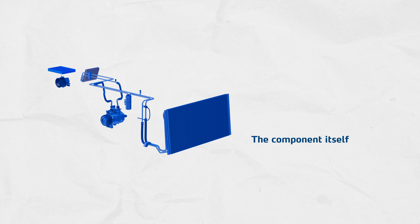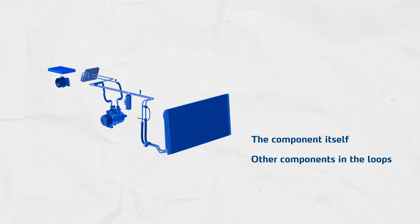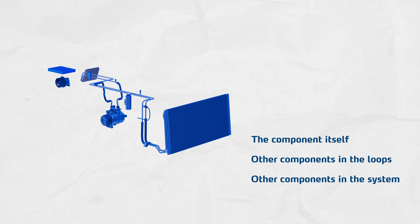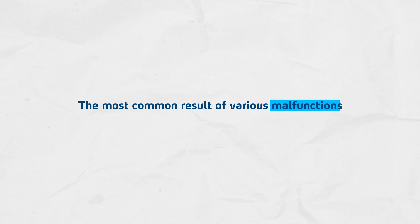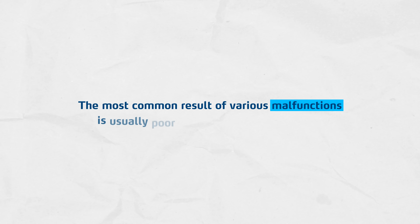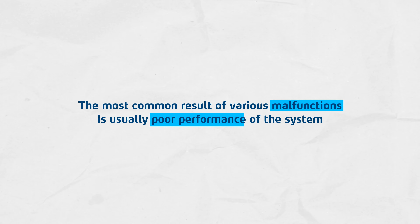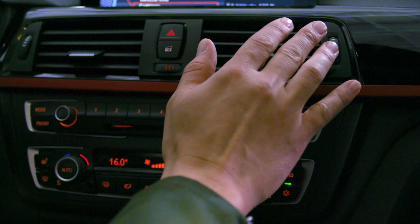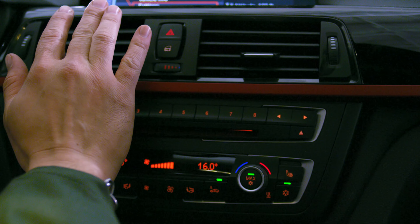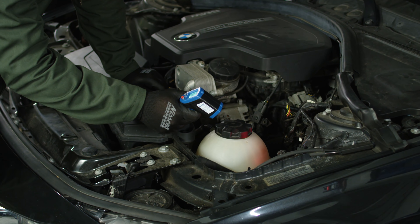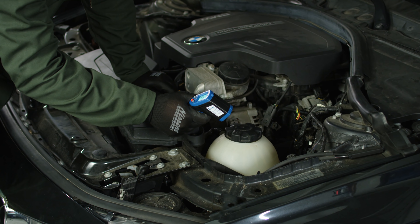These issues relate to the components themselves, other components in the loop, and other components in the system or the consumables applied. The most common result of various malfunctions is usually poor performance of the system — not enough cool air in the vehicle's cabin is a sign to start troubleshooting. Let's have a look at one spot that's easy to access.